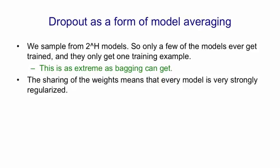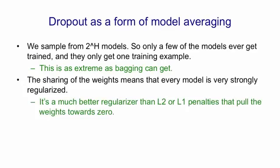The sharing of the weights between all the models means that each model is very strongly regularized by the others. And this is a much better regularizer than things like L2 or L1 penalties. Those penalties pull the weights towards zero. By sharing weights with other models, a model gets regularized by something that's going to tend to pull the weights towards the correct value.